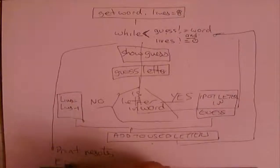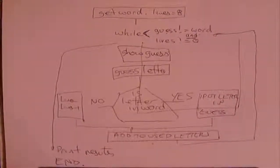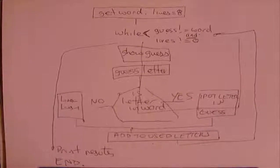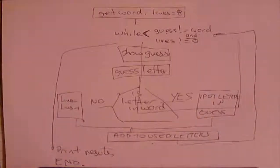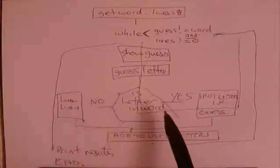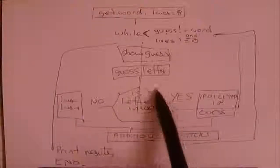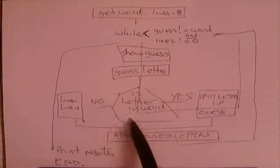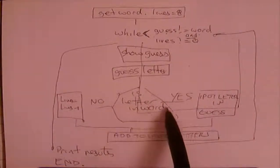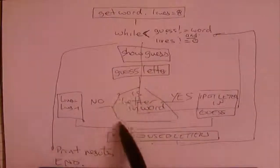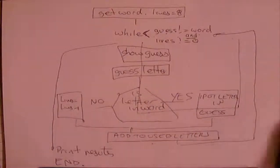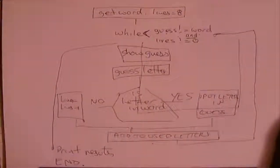We fall out of the loop and on to the next bit of code which prints the results and ends the game. That gives you the coding structure for the Python function. We're going to start by looking at writing the function to figure out if a letter is actually in the word, and we'll use this to help our understanding of strings.